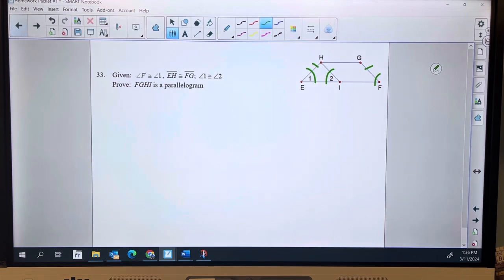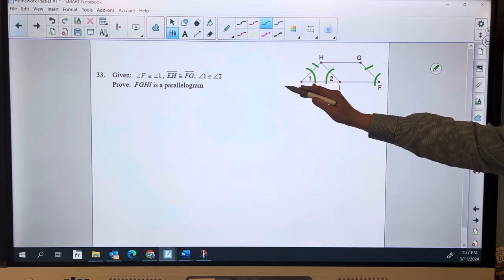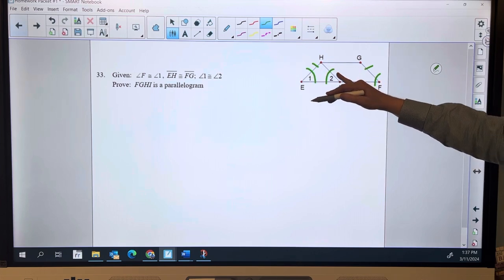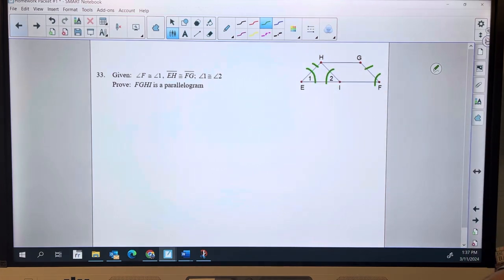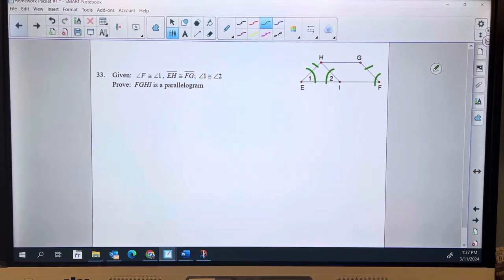The biggest thing that I see here is people love to jump to, okay, we've got base angles, so HI is congruent to GF. Opposite sides are congruent, therefore it is a parallelogram. Not so fast. Opposite sides being congruent just by itself is not enough to prove that it is a parallelogram.